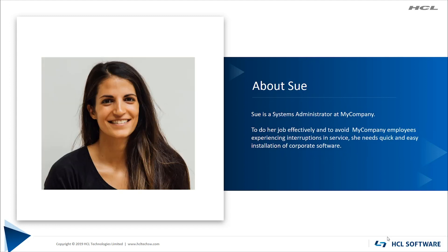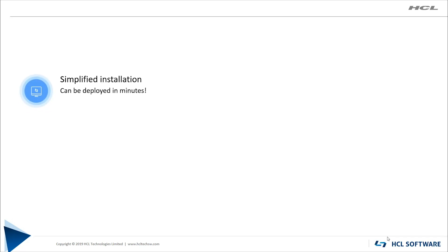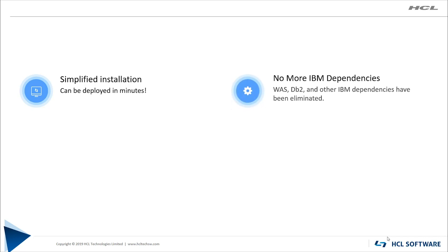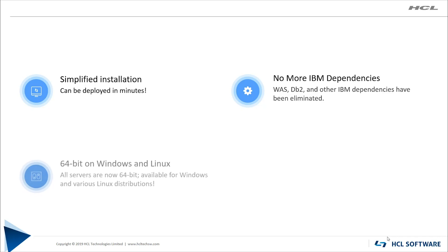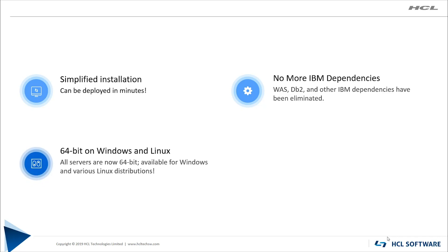Next, let's see how Sametime works for Sue. Sue is a systems administrator at my company, so it's no surprise that quick and easy installation and administration are important to her. Now with Sametime 11, installation of servers is simplified and can be deployed by administrators in a fraction of the time that it previously took. Also, there are no longer dependencies on IBM components such as WebSphere, DB2, System Console, and Installation Manager. Sue's corporate servers will gain better performance now that Sametime has full 64-bit support on Windows and Linux, and Sue can install on the latest versions of Windows and Linux operating systems.